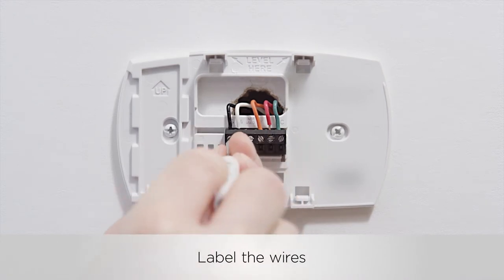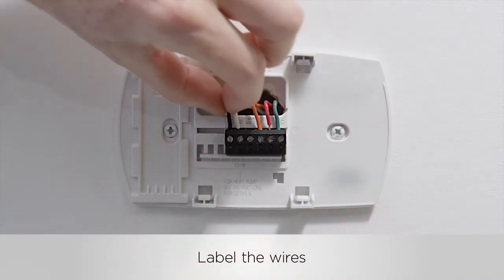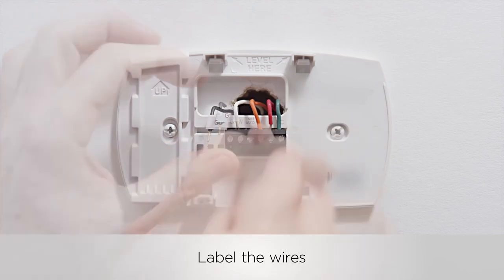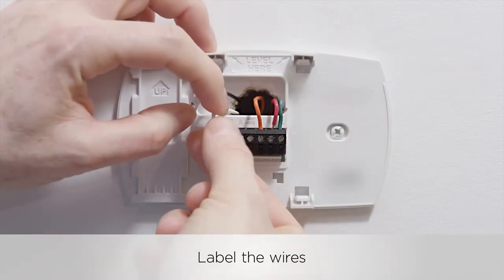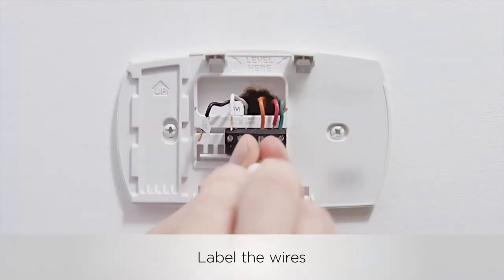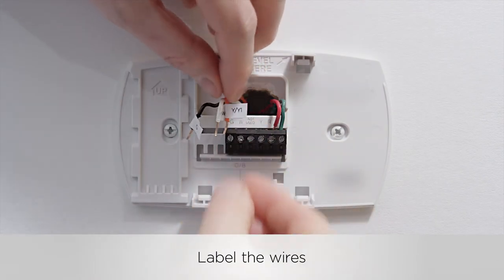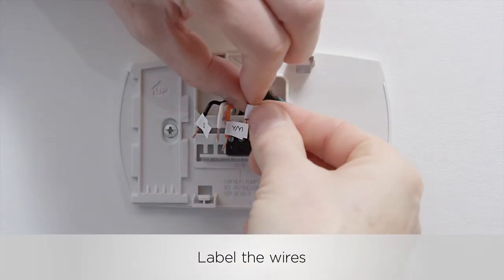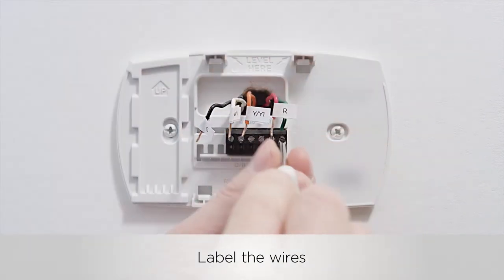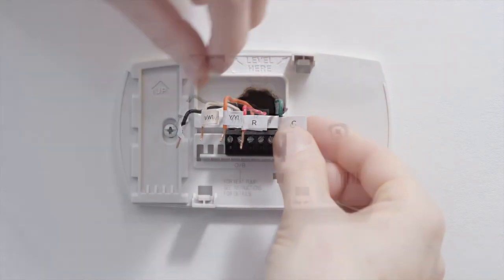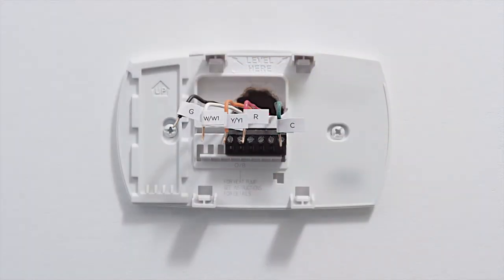Let's finish taking your old thermostat off the wall. Using the wire label stickers provided, one by one, remove and label each wire with the name of the terminal it was connected to. For example, add the Y or Y1 sticker to the wire that was pulled from the Y or Y1 terminal.